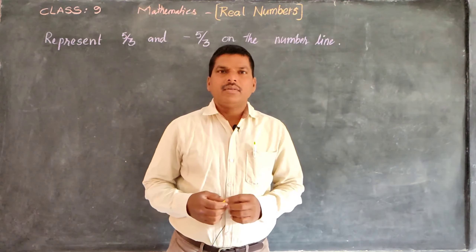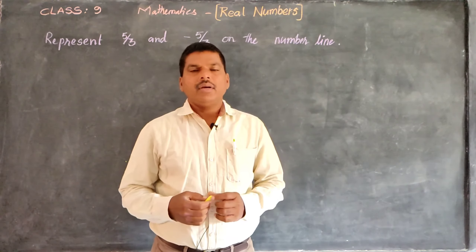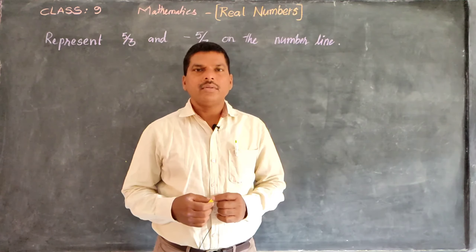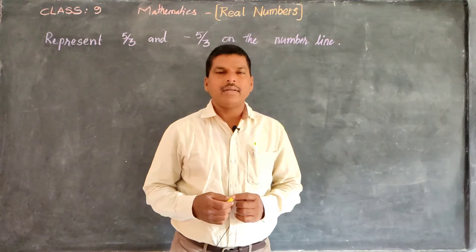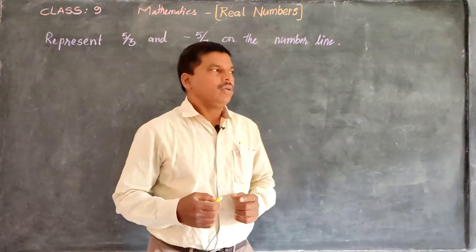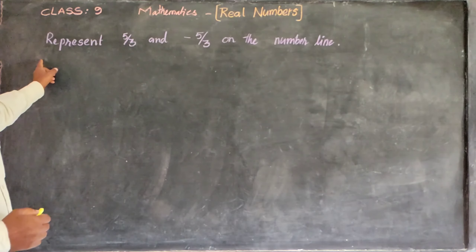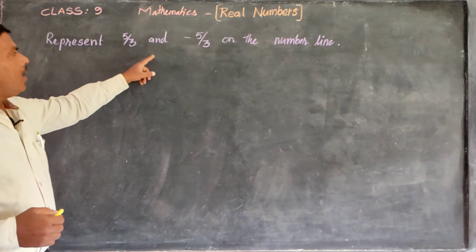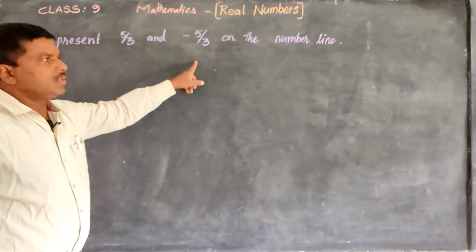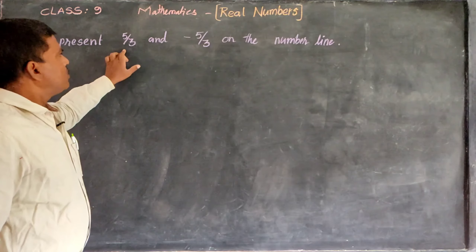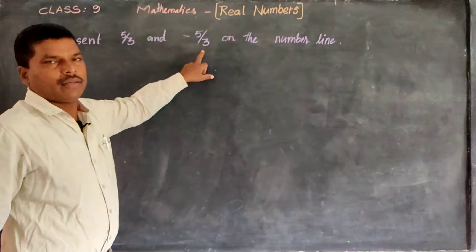We are going to discuss how to represent a fraction on a number line. Here, one example is given: represent 5/3 and -5/3 on the number line. So we have to represent the numbers 5/3 and -5/3 on the number line.